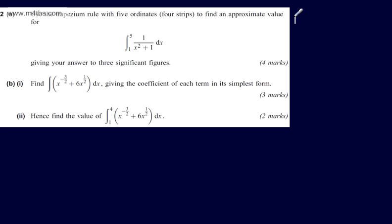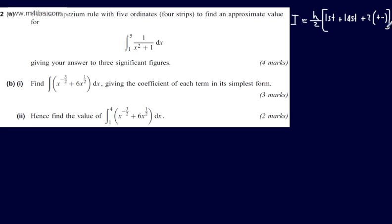The integral using the trapezoid rule will be approximately equal to h over 2, multiplied by the first plus the last plus 2 lots of all of the other values in the middle added together. We're integrating from 1 to 5 with 4 strips or 5 ordinates, which tells us that the strip width h will be 1.